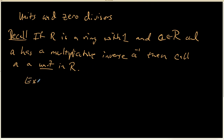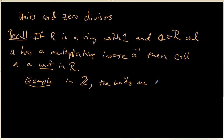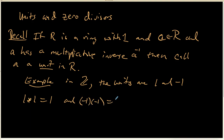As a quick example, inside the ring of integers, the units are simply 1 and negative 1. 1 is always a unit because 1 times 1 equals 1, and negative 1 is a unit because negative 1 times negative 1 equals positive 1. Those are the only two elements in ℤ that are said to be invertible, or units.